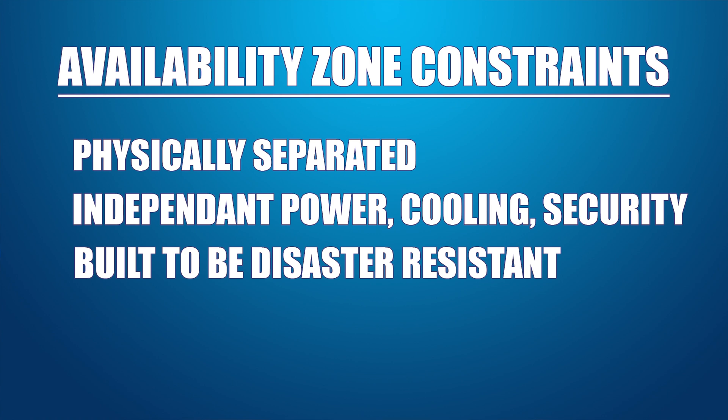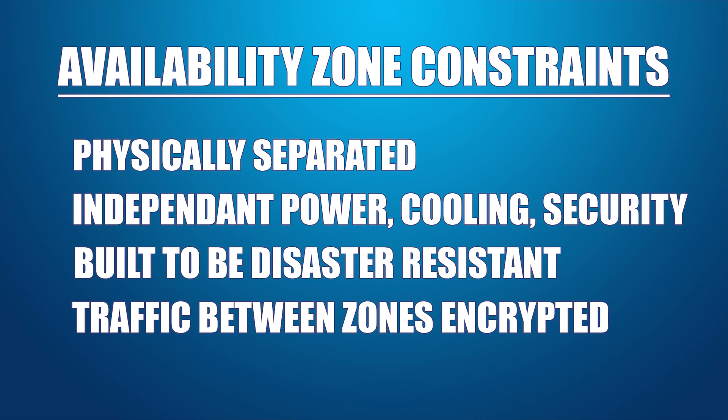The final criteria is that all traffic between availability zones is always encrypted. So now the big question — which region should you use? As long as you pick a region that is geographically close to your users, you really can't pick a bad region. US East 1 is the most popular region in AWS because it used to be the default, and for a long time it was the one that got new features first.